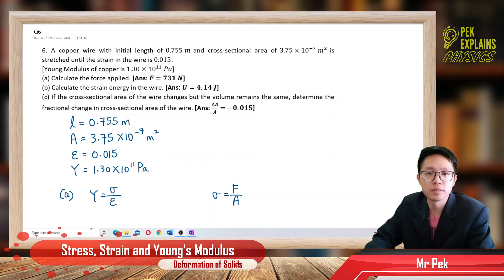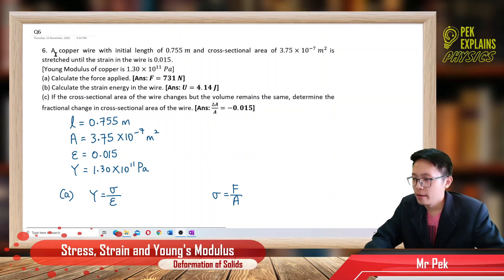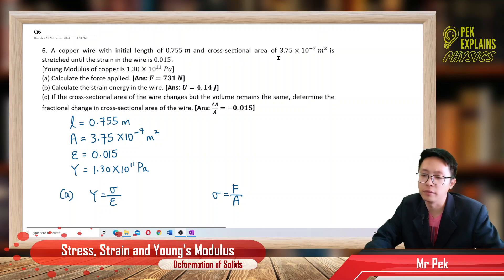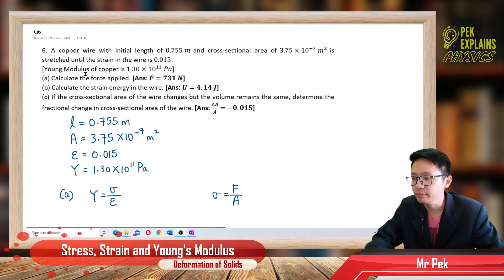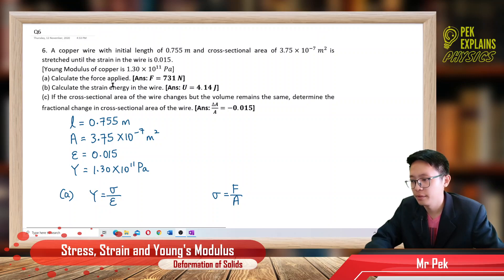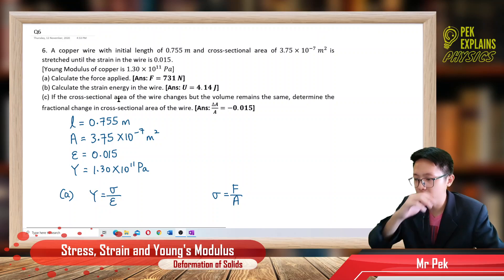Alright, here comes question 6. A copper wire with initial length 0.755 meter and cross-sectional area of 3.75×10⁻⁷ meter square is stretched until the strain in the wire is 0.015. Young's modulus of copper is 1.3×10¹¹ Pascal. Calculate the force applied and the strain energy.